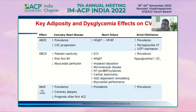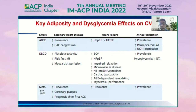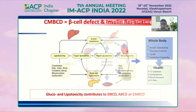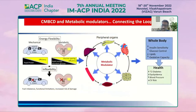Adiposity and dysglycemia affect cardiovascular disease. The ABCD model increases the prevalence and progression of coronary artery calcification, preserved and reduced ejection fraction, and atrial fibrillation. DBCD leads to more reactive platelets, higher risk of first myocardial infarction, decreased myocardial perfusion, and cardiac lipotoxicity. The CMBCD model leads to more coronary plaques, higher incidence of first acute coronary events, heart failure, atrial fibrillation, and death. It is a combination of beta cell defect, insulin resistance, lipotoxicity, and glucotoxicity that contributes to DBCD, ABCD, and CMBCD.